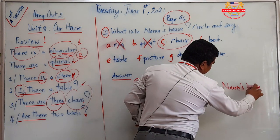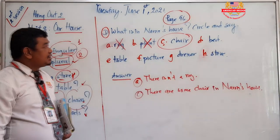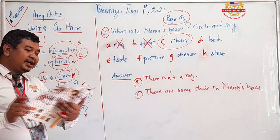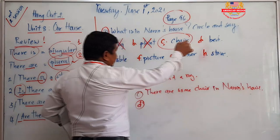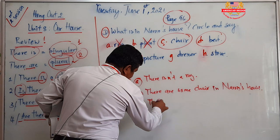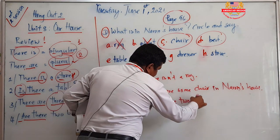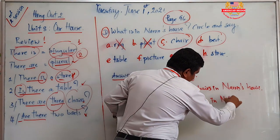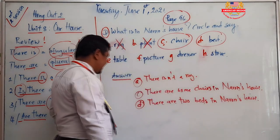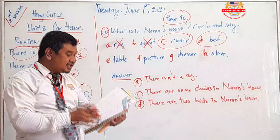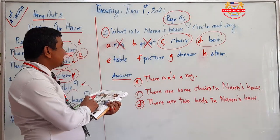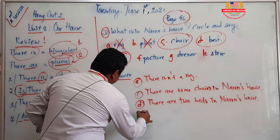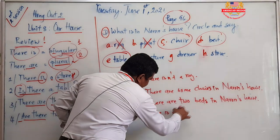I'm not sure exactly how many chairs, so we say 'some chairs.' Now, the bed — can you see beds in Narom's house? Yes, there are two beds. Circle it. So: 'There are two beds in Narom's house.' And for the table — there is a table. Circle it: 'There is a table in Narom's house.'